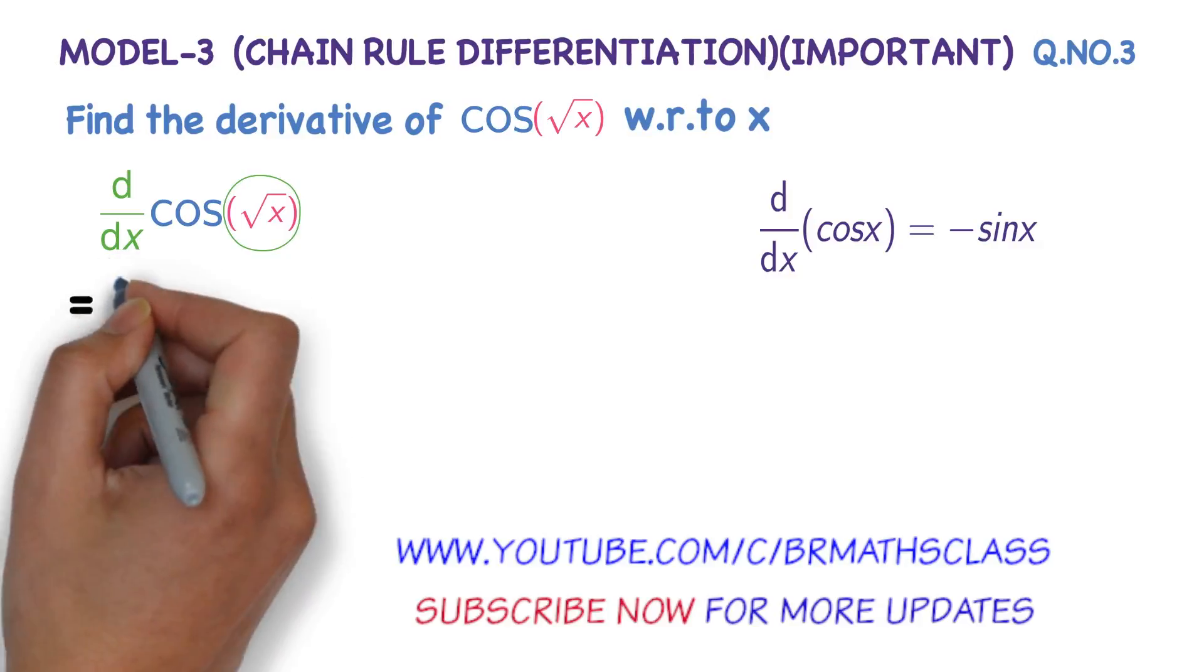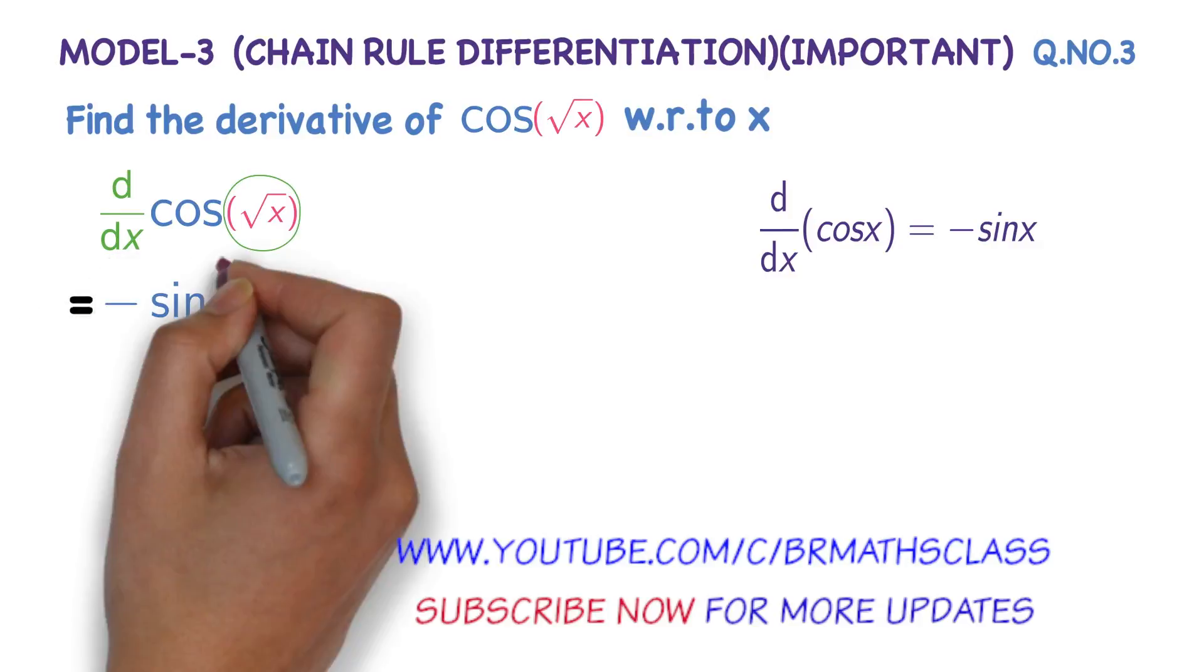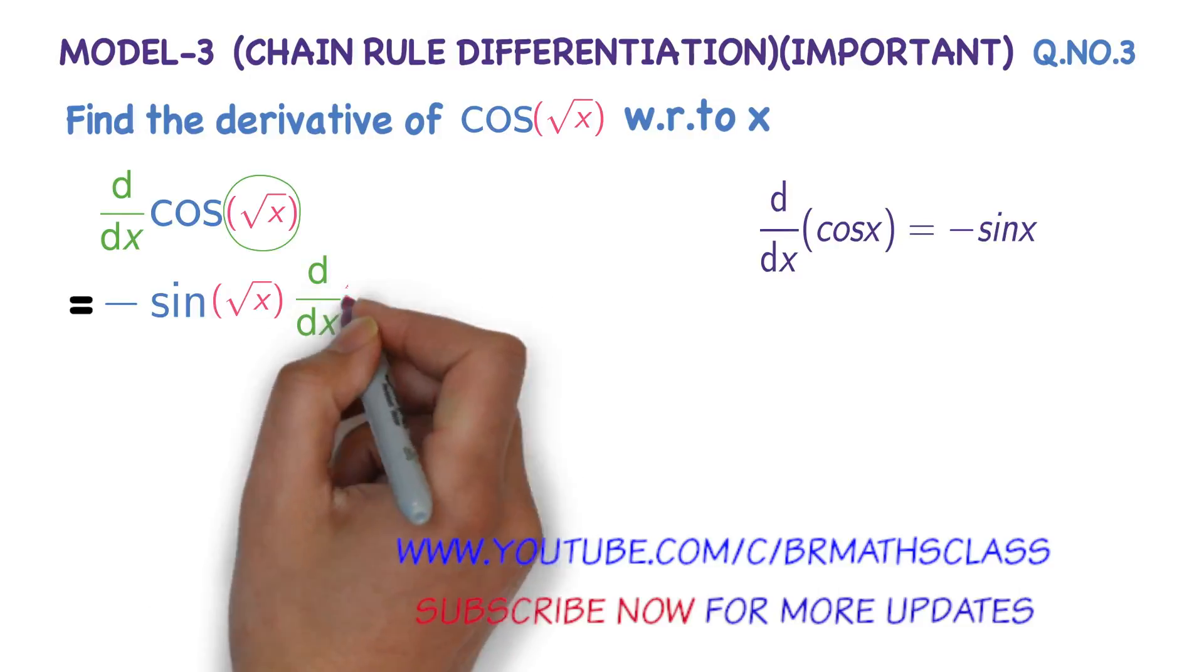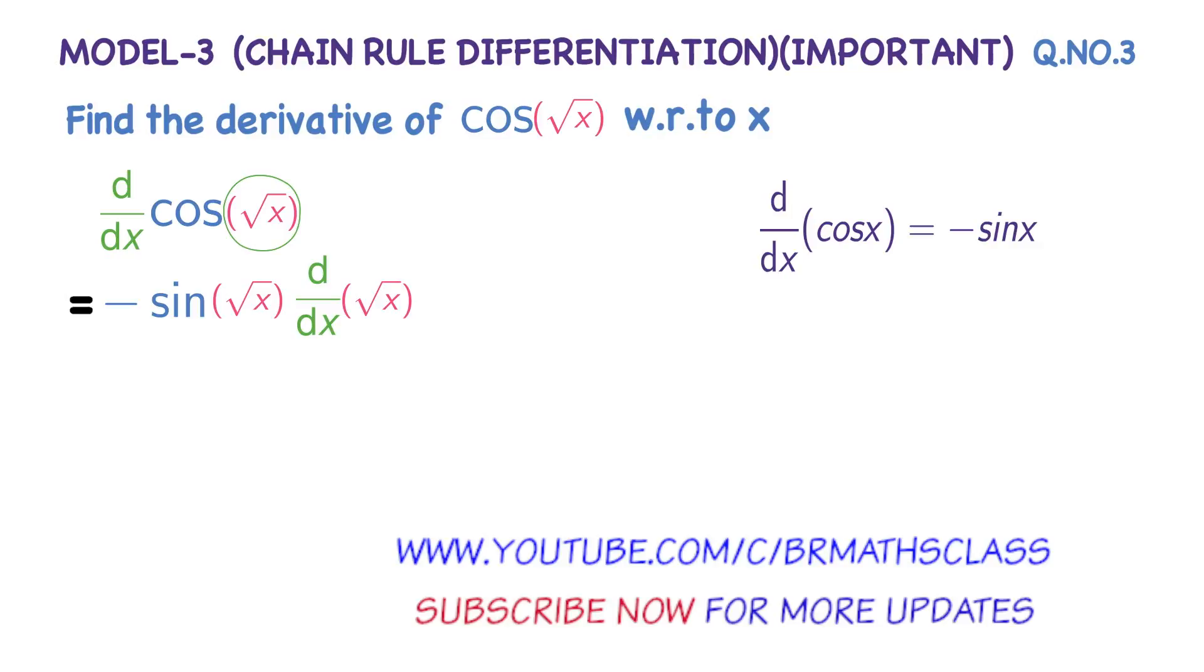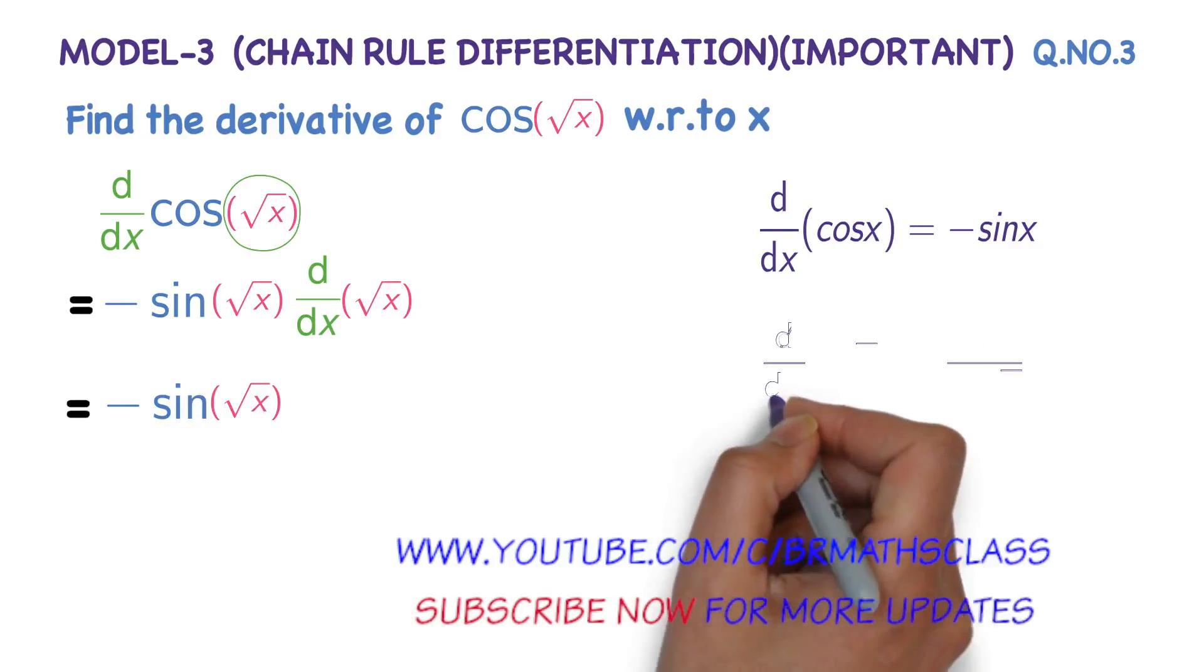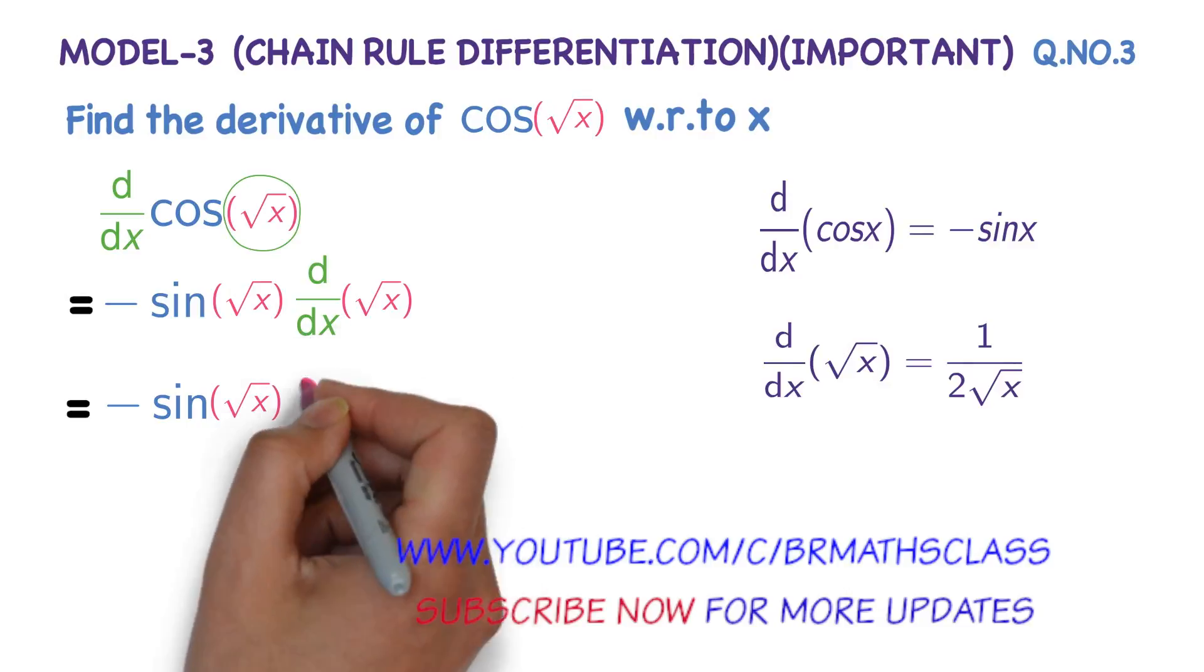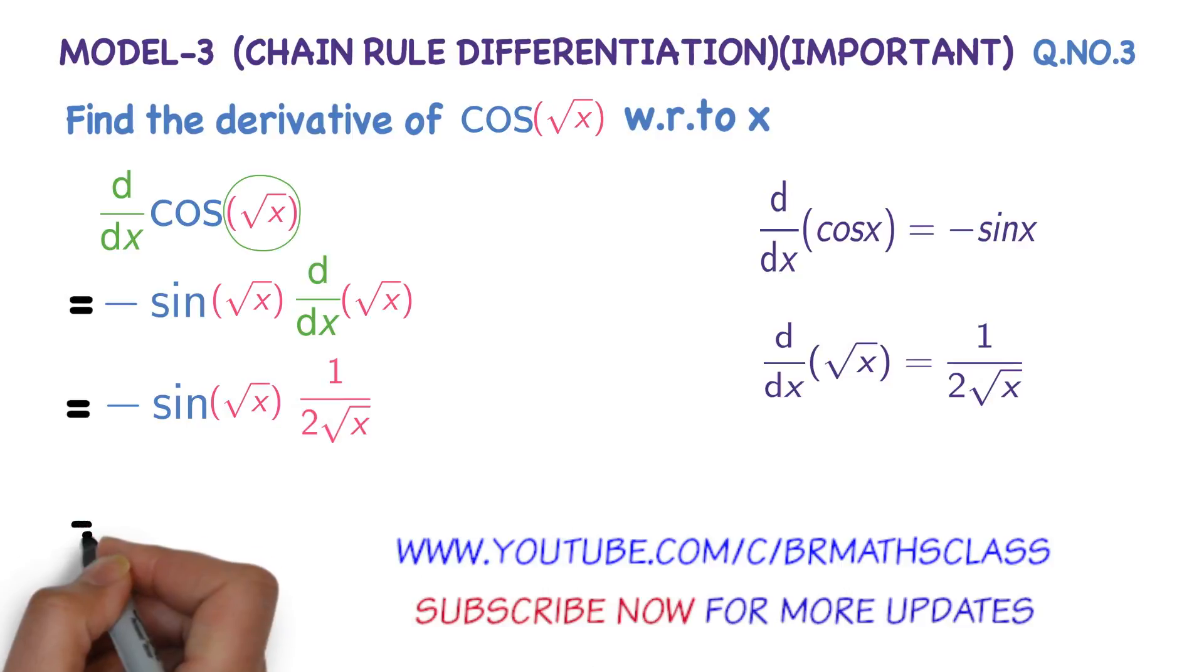The derivative of cos(√x) is minus sin(√x) times—which one did you imagine as x? You need to differentiate it. The derivative of √x. We know this formula: the derivative of √x equals 1 divided by 2√x. So we apply the same formula here.